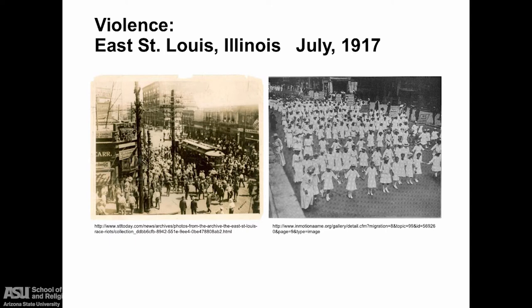In St. Louis, the fear of blacks being used as strike breakers led to violence in July of 1917. With no police or National Guard protection, 40 to 150 African American residents of East St. Louis were killed and 6,000 fled the city. The NAACP sponsored the Silent March, pictured here in New York City, where 10,000 marched to protest the lack of government protection and the suppression of dissent.